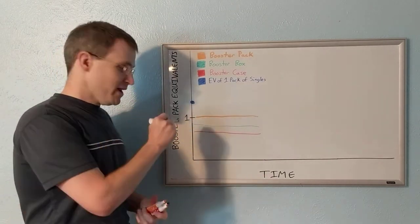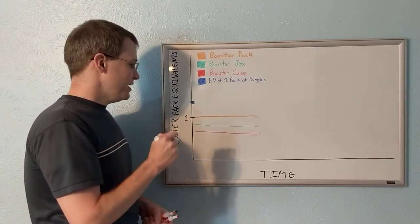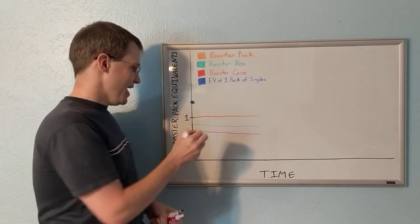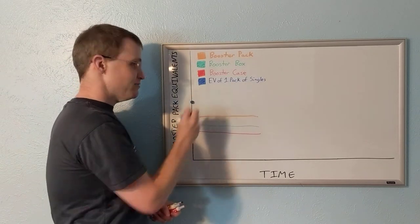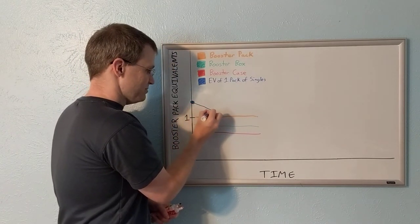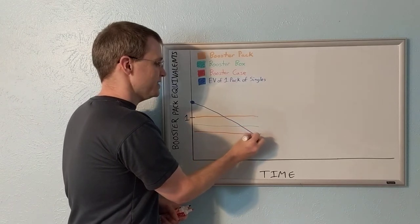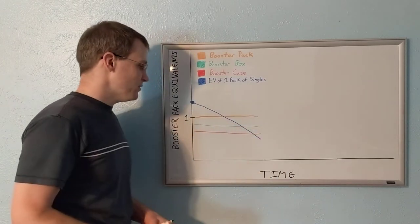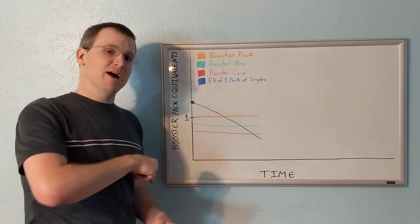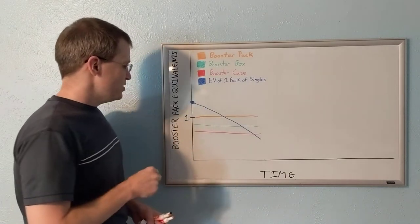But here's what happens. A bunch of people do that. The market gets really crowded. And pretty quickly, there's tons of singles to be had. So the expected value of one pack of singles starts to sink. It comes down and down. Over time, people open more boxes and people who wanted singles, they acquire them.